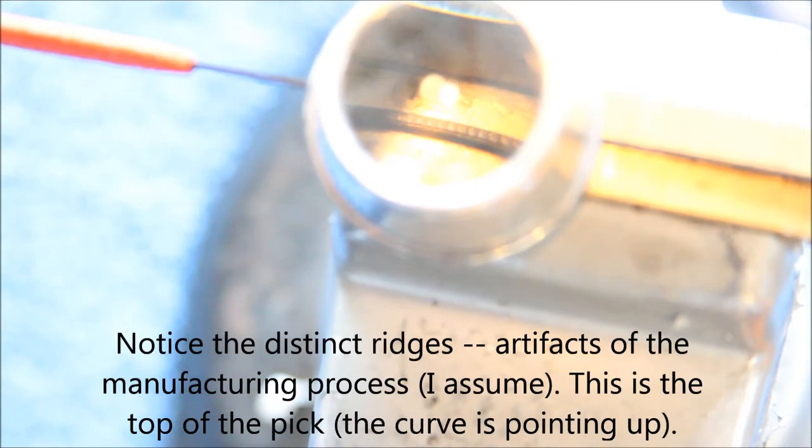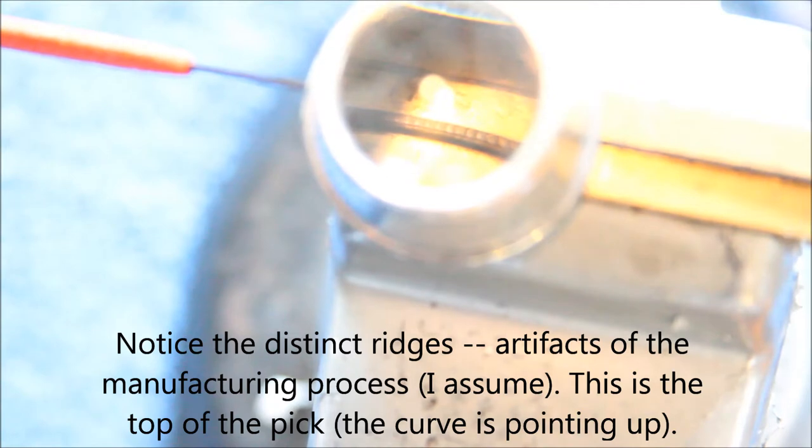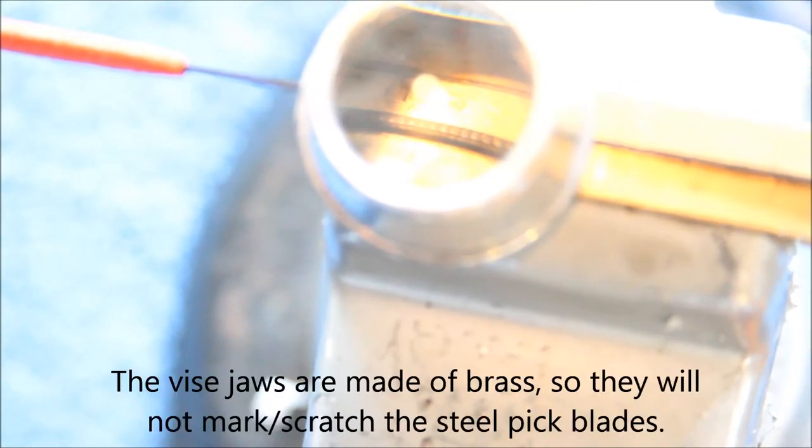So here's the top of, or the back, the bottom of one of the picks at about 10x magnification. Now, if you can see all those what look like serrations in there, those are those little clicky bumps that I was talking about.